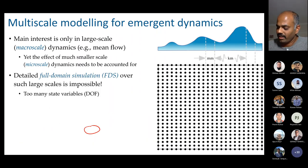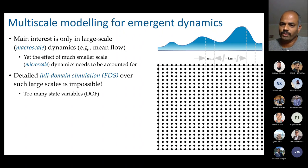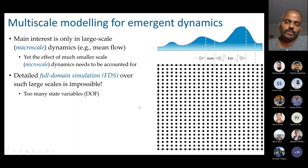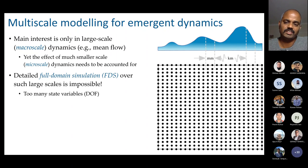In tsunamis and many other geophysical fluid dynamics problems, the typical interest is only on the macro scale of the order of several kilometers — it could be hundreds and thousands of kilometers. Still, the macro scale dynamics emerges from strong interactions between scales. Very small millimeter-scale physical processes can easily influence macro scale dynamics of hundreds of kilometers, so we need to account for micro scale dynamics to accurately capture macro scale behavior.